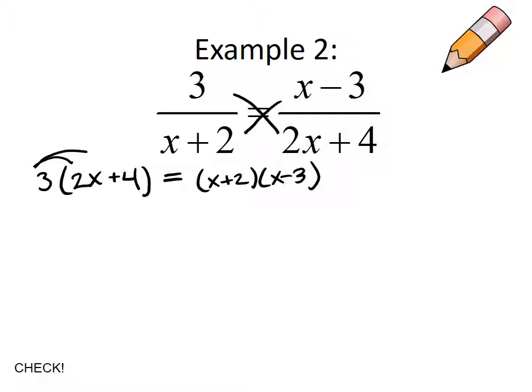If I distribute, I end up with a 6x plus 12. Now remember, this is a skill we need to continue to practice. First, outer, inner, last. If I use my FOIL rules, I will end up with this expression which can then of course combine like terms.